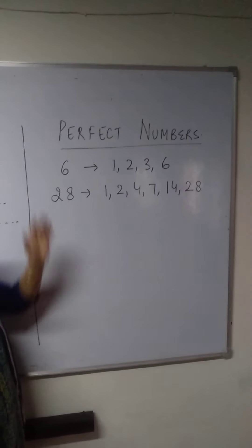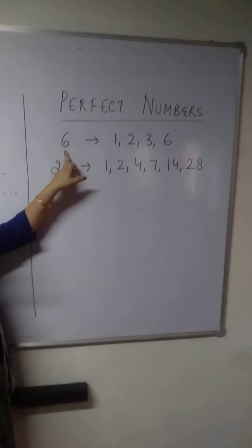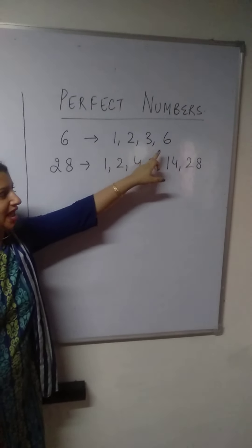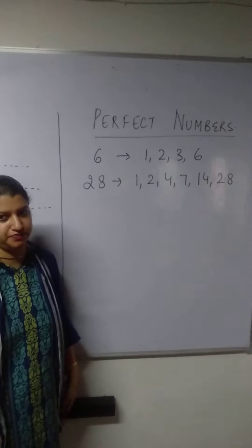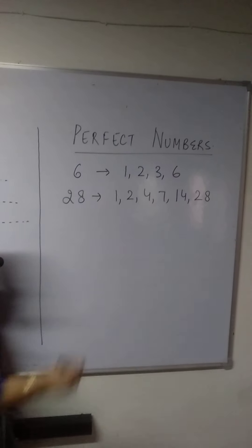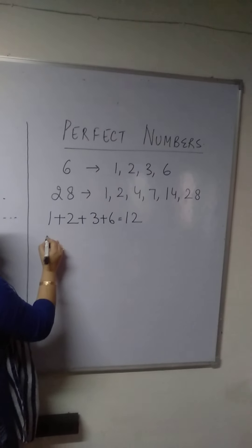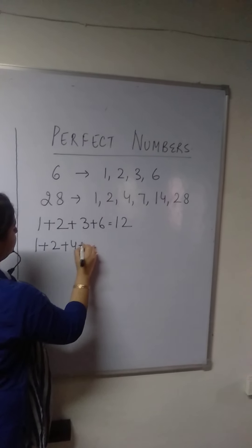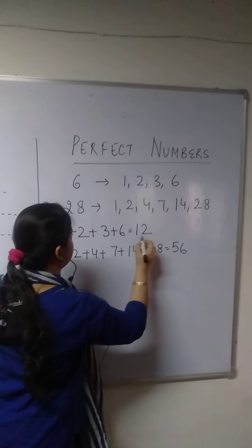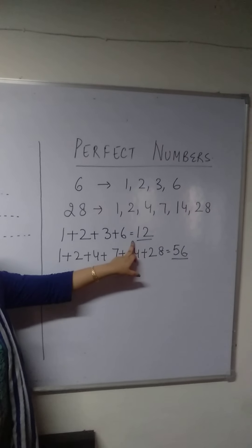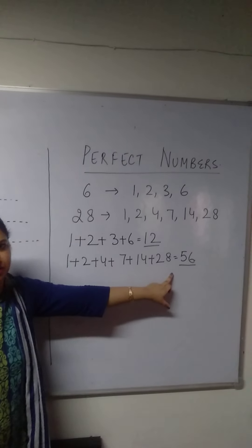Now we are going to understand one more topic about factors — that is the perfect numbers. I have written the factors of 6: 1, 2, 3, and 6. And the factors of 28: 1, 2, 4, 7, 14, and 28. If I carefully add all the factors of 6 — 1 plus 2 plus 3 plus 6 — the answer is 12. And if I add all the factors of 28 — 1 plus 2 plus 4 plus 7 plus 14 plus 28 — the answer is 56. In both cases, the answer after addition is coming double the given number: 6 into 2 is 12, and 28 into 2 is 56.